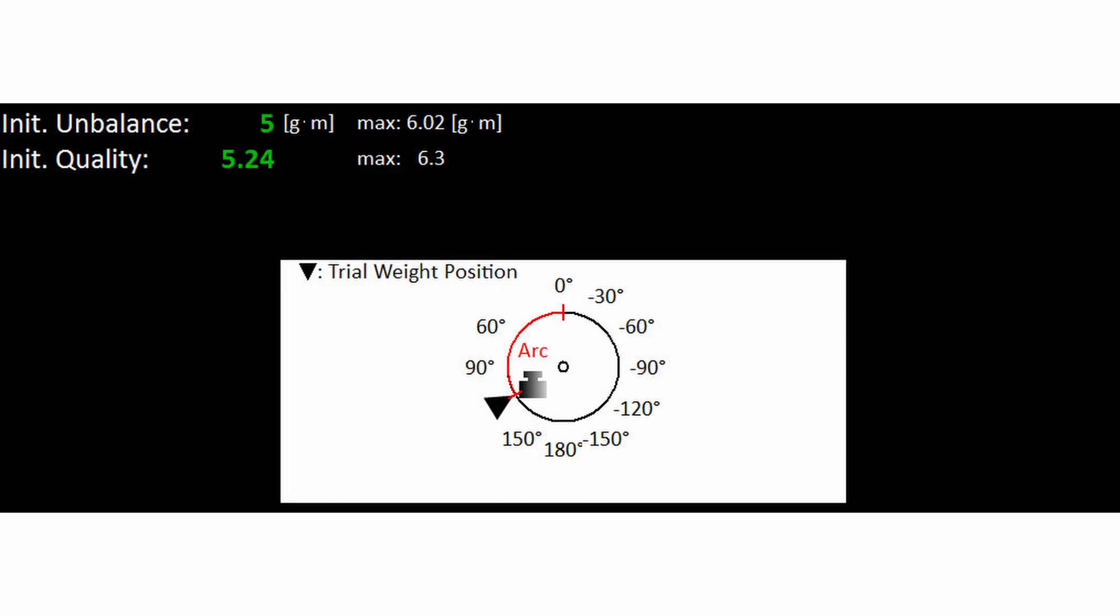This is another example of screen after trial run. You can see initial residual unbalance. It is 5. It is less than permissible unbalance which is 6.02. There is no need to balance this rotor. This is the initial grade 5.24. It is less than required grade 6.3. We don't have to balance.